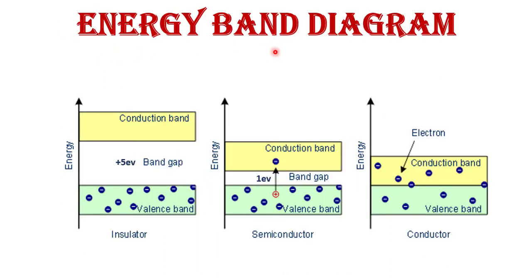Now, using the energy band diagram, I will explain semiconductors, insulators, and conductors. First, let us understand what energy bands are. In different states of matter — solid, liquid, or gas — molecular arrangement is very different. In solids, molecules are very close to each other, so the electron orbits of neighboring atoms overlap.